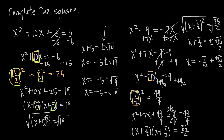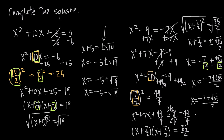Since both terms on the right share a denominator of 2, we can combine them into one fraction: x equals negative 7 plus or minus root 85, all over 2. Written as two separate solutions: x equals negative 7 plus root 85 over 2, and x equals negative 7 minus root 85 over 2. Those are the two solutions found by completing the square.